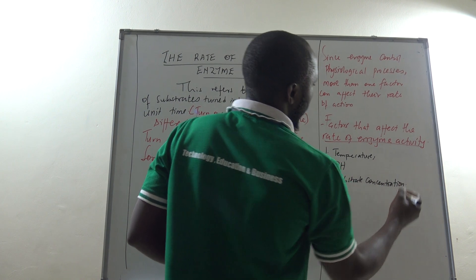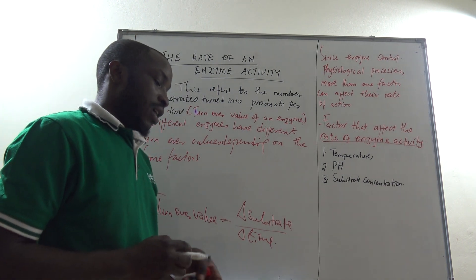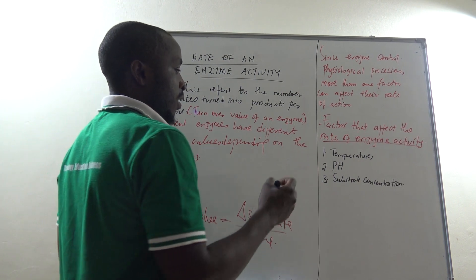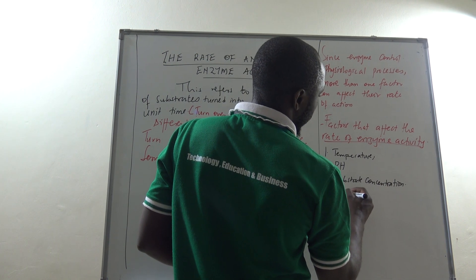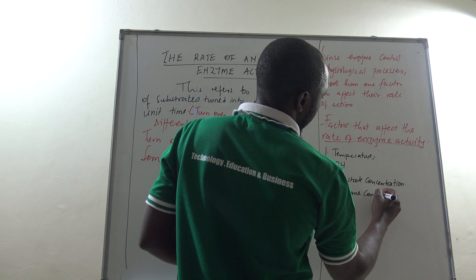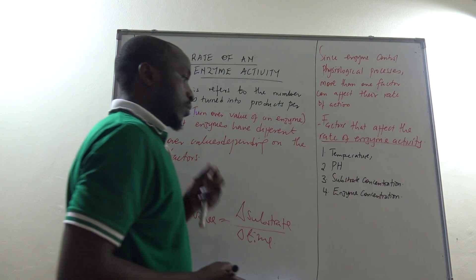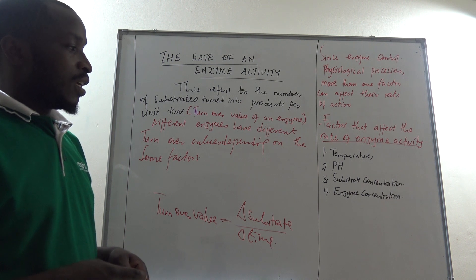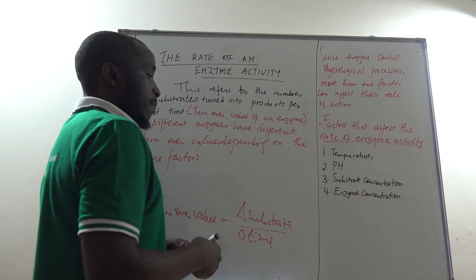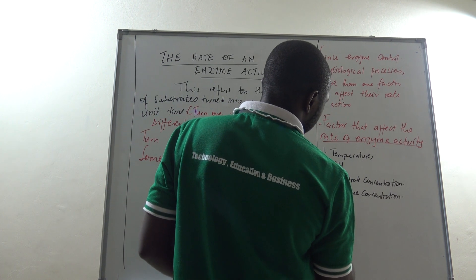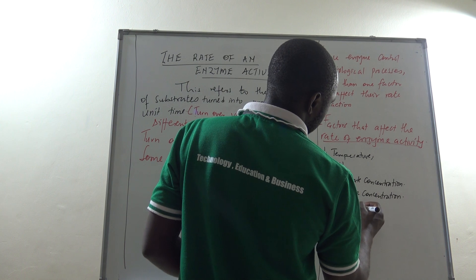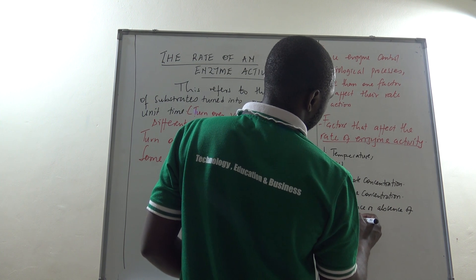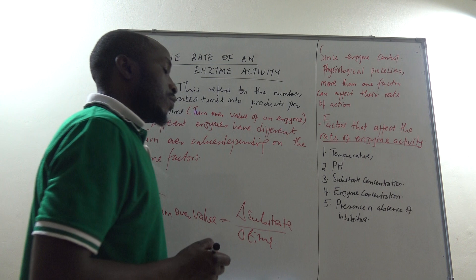When we start experiments, we shall see in paper three how substrate concentration can be experimentally determined. Factor four is enzyme concentration. Being that enzymes are the ones working, the higher the concentration, the higher the rate of reaction, as we shall see. Factor five is the presence or absence of inhibitors.